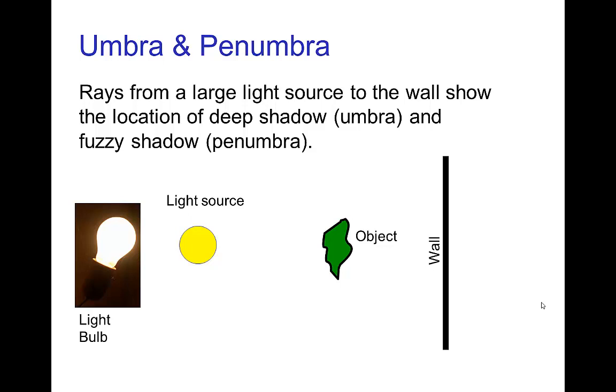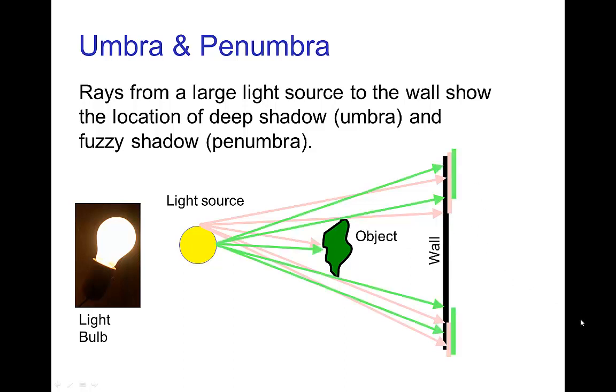Now for a more general type of light source, say from a light bulb, when we trace out the rays coming from the light source to the wall, we see that the rays that come from the top of the light source, some of them are blocked by the object, some of them reach the wall.